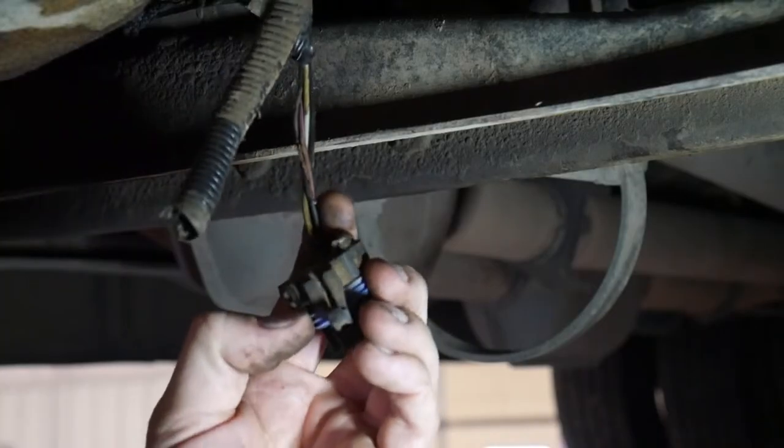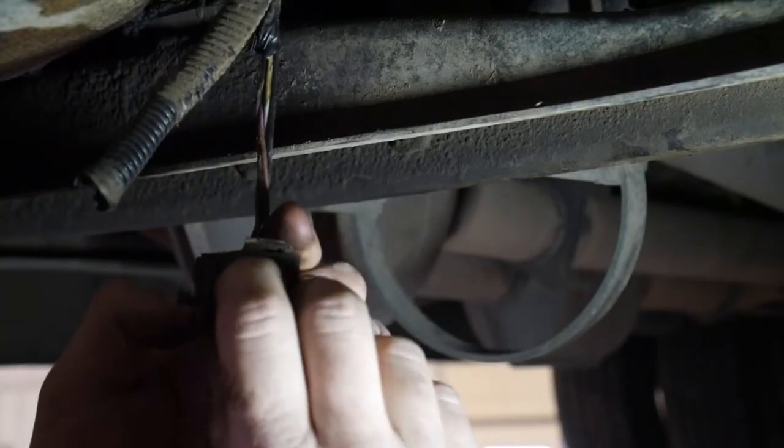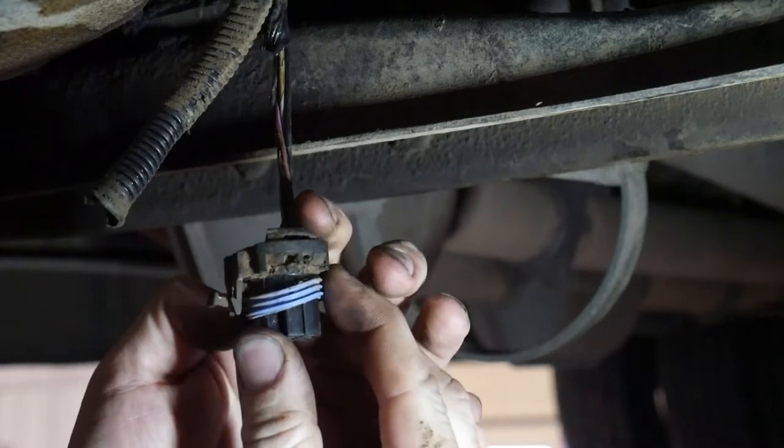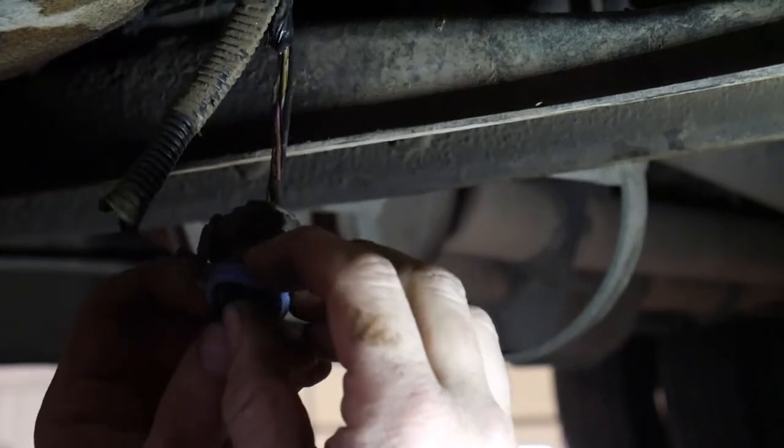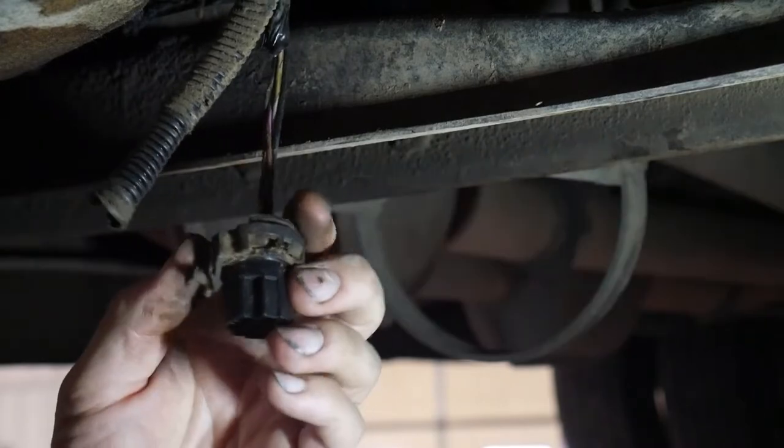I want to pull the grommet off of here because I'm going to use some brake parts cleaner to clean this up. It'll cause this grommet to swell up and then I'll have a hard time getting it back together unless I wait for it to dry out again.